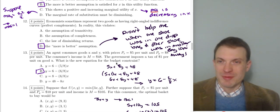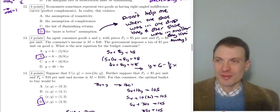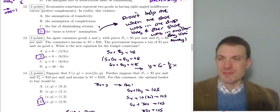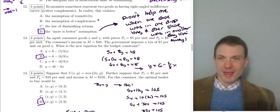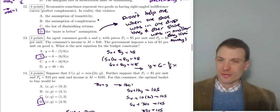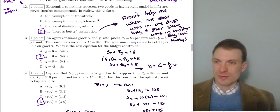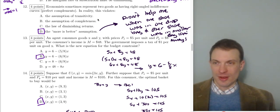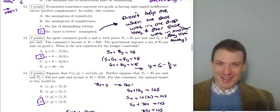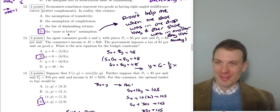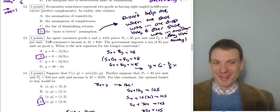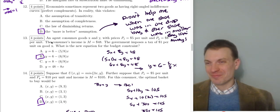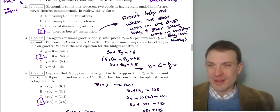Question twelve: economists sometimes represent two goods with right-angled indifference curves (perfect complements). In reality this violates more-is-better. Like the ultramarathon example: if you put one shoe in one drop bag and one in another, arriving at an aid station with two right shoes and one left shoe doesn't help — you're actually worse off. That's a violation of more-is-better.